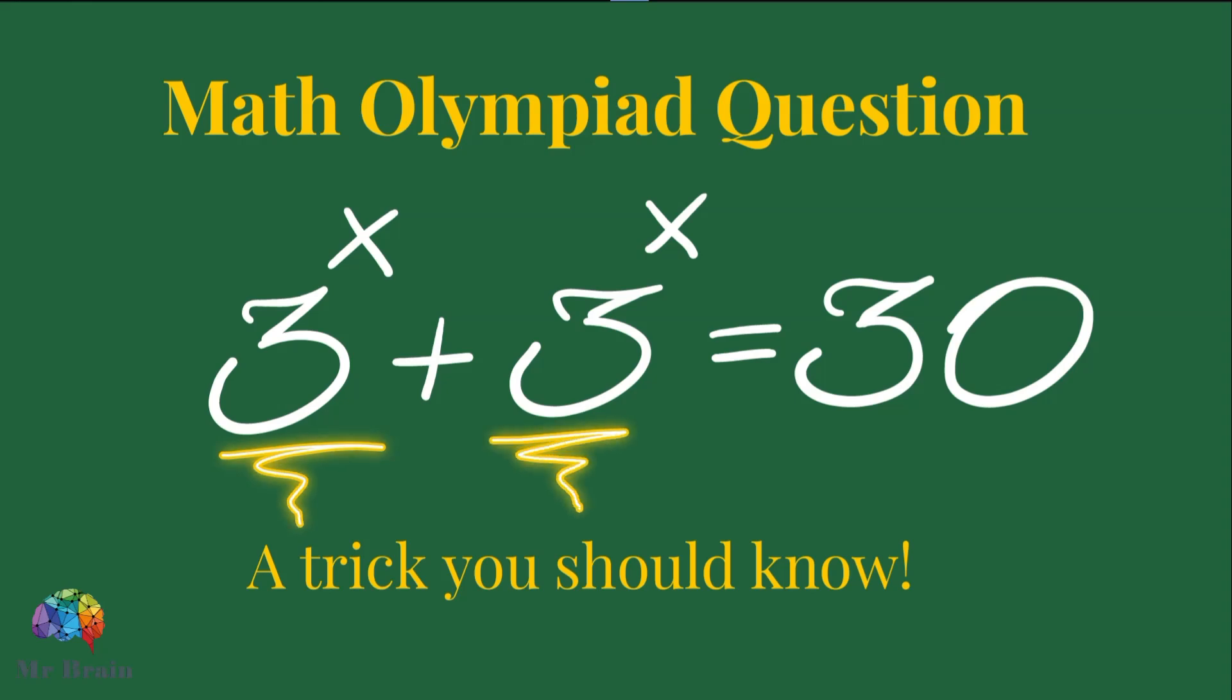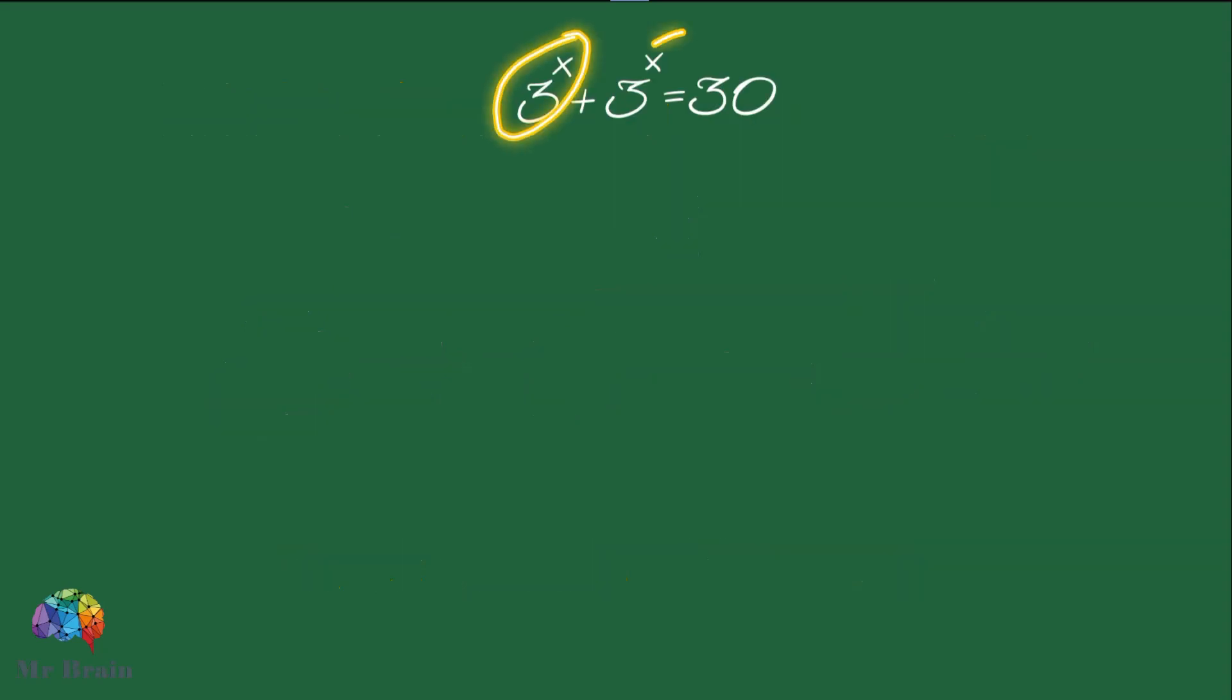3 to the power of x plus 3 to the power of x equals 30. The first step is to write 3 to the power of x plus 3 to the power of x as 2 times 3 to the power of x.